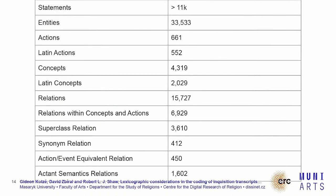These are some quick statistics. We don't quite know the complete number of statements built already because we have been working with two different sources — one imported into the database, the other made on Google Sheets at different stages of the project, so we are working towards merging that. There are quite a lot of entities, of which actions are a small portion at this stage. Most of them are Latin. Within the concepts and actions network we have just under 7,000 relations, with superclass relations, synonym relations, action-event equivalent, and actant semantics relations.